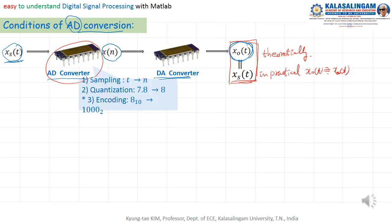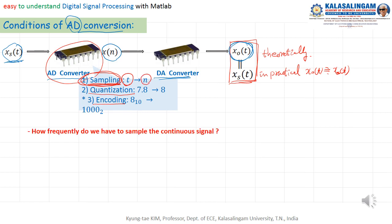Also, this AD converter contains a sampling function, a quantization function, and an encoding function. Today, I would mainly like to explain to you the sampling concept — sampling means converting continuous time to discrete time.